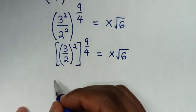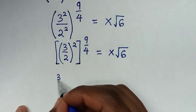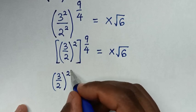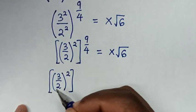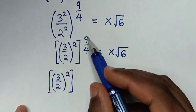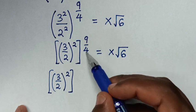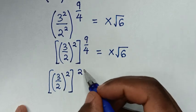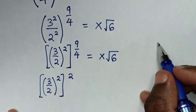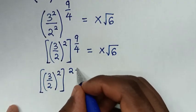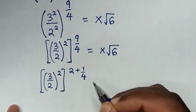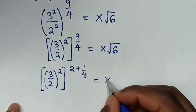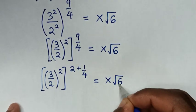Then in the next step, it will be (3 over 2) bracket squared, then bracket. From here, 9 over 4 — 9 divided by 4 gives 2 remainder 1, so we are left with 1 over 4. The exponent becomes 2 plus 1 over 4, and this equals x square root of 6.